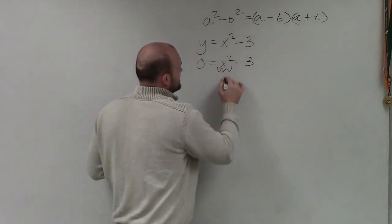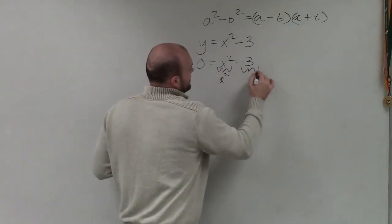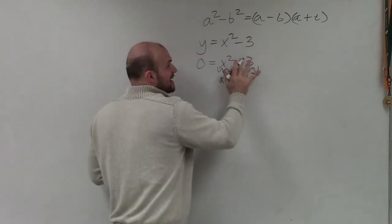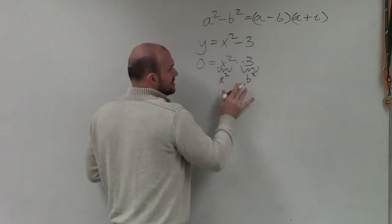So we can definitely say that this is a squared and this is b squared. Forget about the minus. We already know that's there. We just want to identify our a squared and b squared.